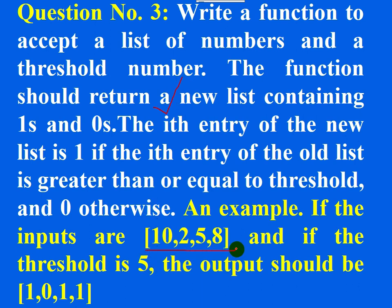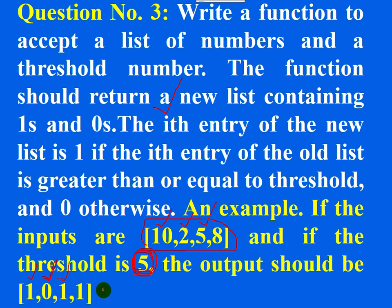For example, suppose this is the given list and the threshold number is five. The first element is 10, which is greater than or equal to five, so the new list entry is one. The second element is two, which is less than five, so the entry is zero. The third element is five, which is greater than or equal to five, so the entry is one, and so on.